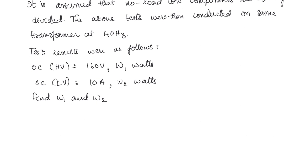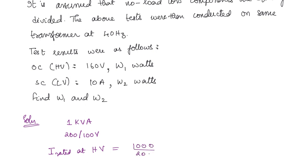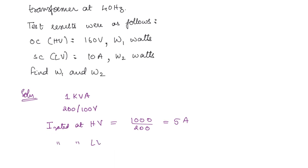We will try to solve this question. First, we write down the ratings: it is a 1 kVA transformer, 200 by 100 volt. The rated current on the HV side (200 V) is 1000 divided by 200, which is 5 amperes. The rated current on the LV side is 1000 divided by 100, which is 10 amperes.